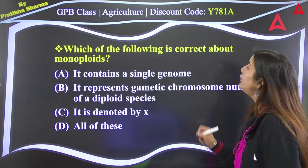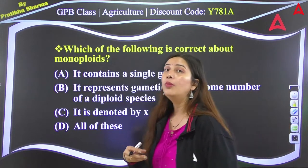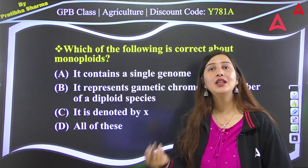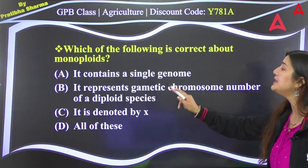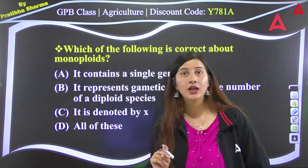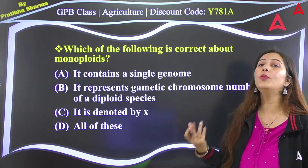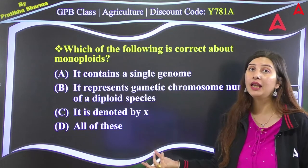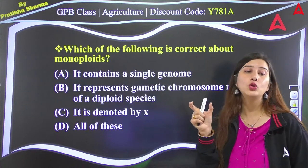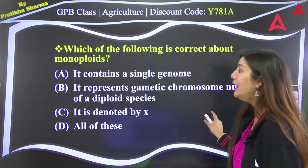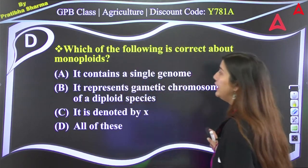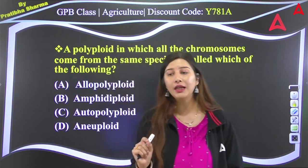Next question: which of the following is correct about monoploids? A: it contains a single genome; B: it represents the gametic chromosome number of a diploid species; C: it is denoted by X; D: all of these. The right answer is D — all of these statements are correct. X is your basic chromosome number, also called monoploid.